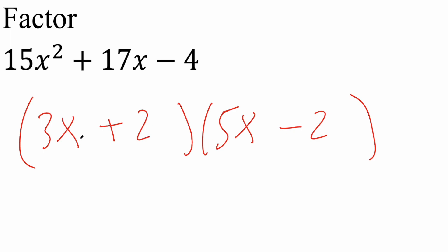The way we're going to know this is correct or not is this middle term right here. We take our 3x and multiply by negative 2 to get negative 6x. We take our 5x, multiply by 2, and get 10x. And 10x minus 6x is 4x, not 17x. So this right here is incorrect.